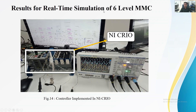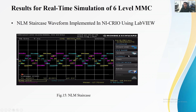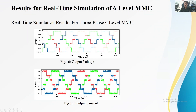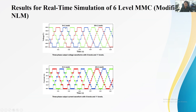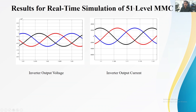These are the real-time simulation results for the six-level MMC implemented in the NI-PXI and NI-CRIO. You can see the NI-CRIO showing reference voltages and stair waveforms provided to the converter as input. When the number of levels is low, the output waveform is not very smooth, but when we increase from six levels onward, the output waveforms become smoother and smoother, approaching a sinusoidal shape. When the NLM is modified, the output waveforms become much better than conventional NLM, and increasing from six to 51 levels yields a nearly sinusoidal output.